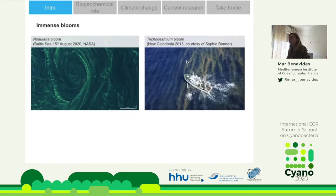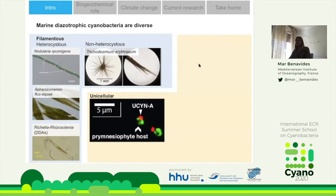Trichodesmium are also well known for forming blooms — they are a little more brownish. This is a bloom in New Caledonia in the South Pacific, and they form very typically these slicks at the surface.